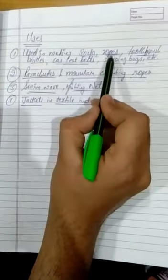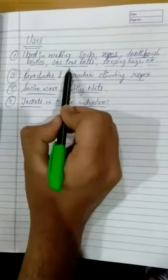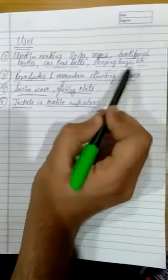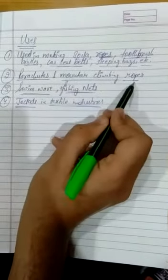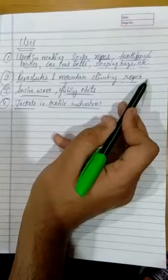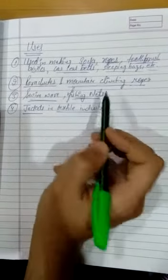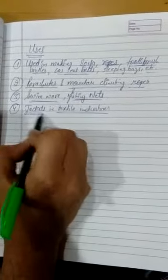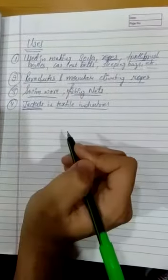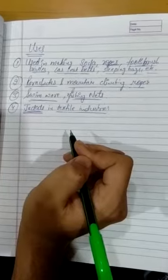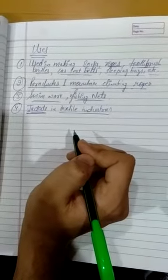I repeat: it is used in making socks, ropes, toothbrush bristles, car seat belts, sleeping bags, parachutes, mountain climbing ropes, swimwear, and fishing nets. It is also used in textile industries to make jackets. Okay, got it everyone? The uses of nylon. Thank you.